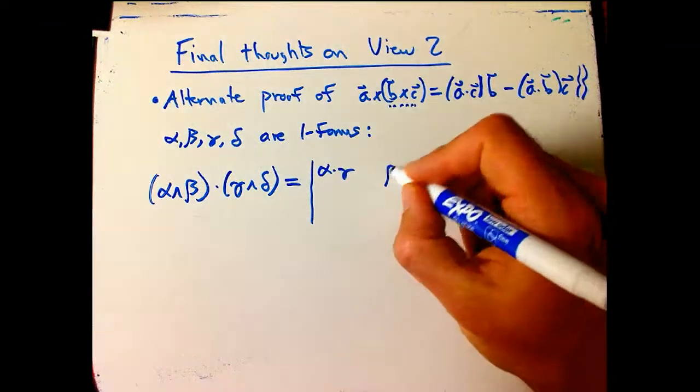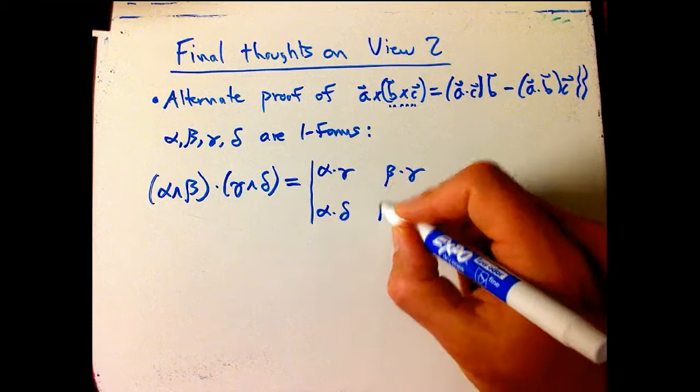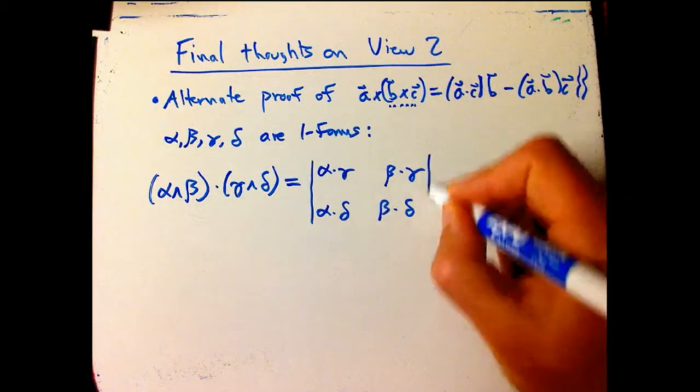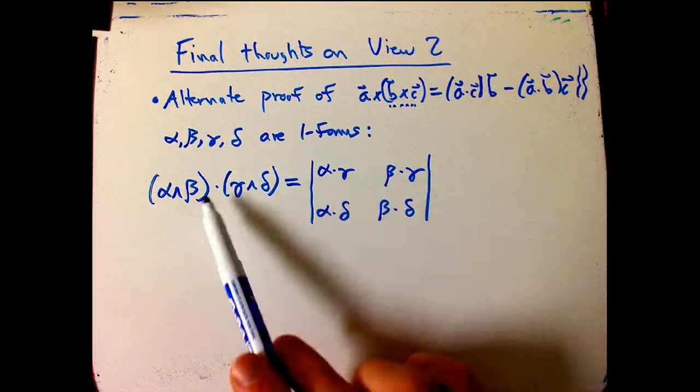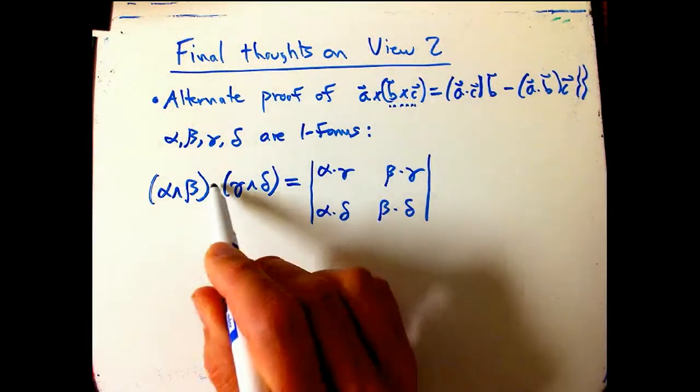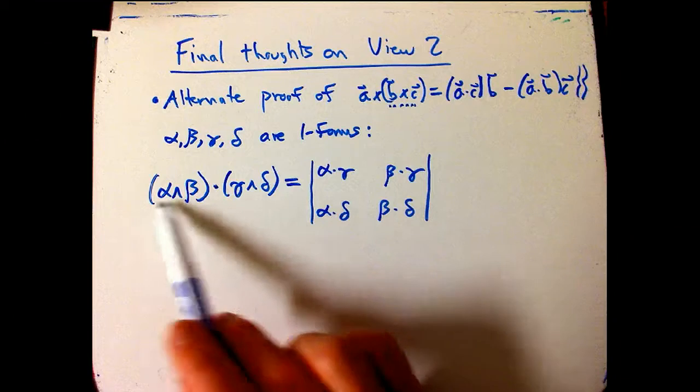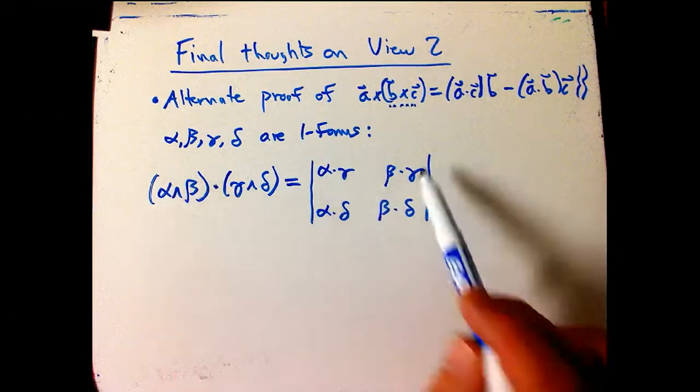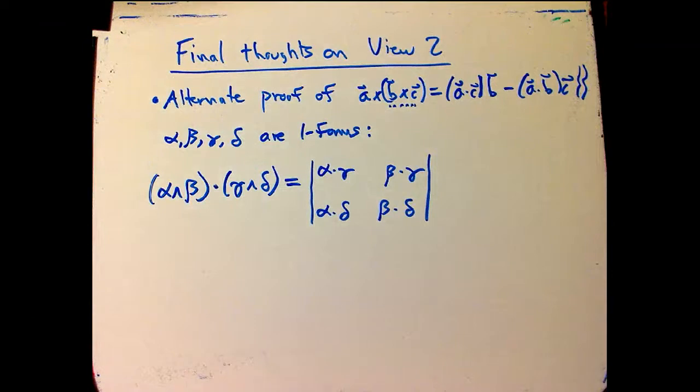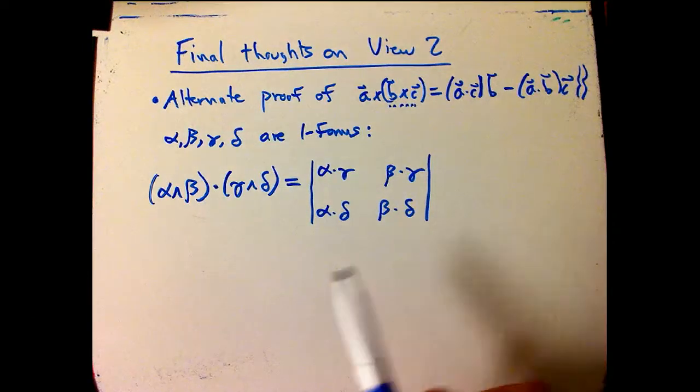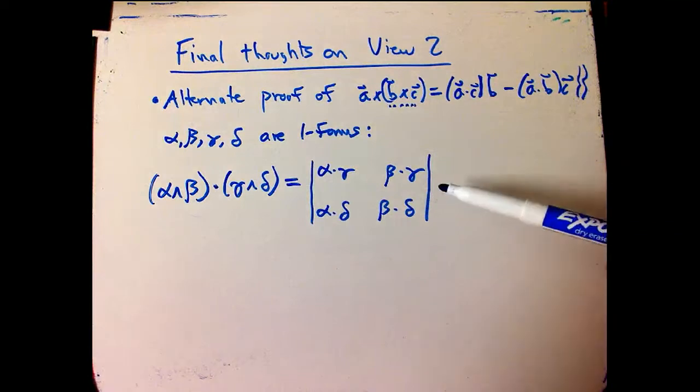I claim that this has a very nice formula. You just look at the pairwise dot products of these forms, and take a two by two determinant. Hopefully that's pretty reasonable. The dot product of two forms, if those two forms are built out of one forms, it should have to do with the dot products of the individual one forms. And anything to do with two forms, that really should have to do with two by two determinants, because two forms are kind of encoding two by two determinants. They're encoding areas. So this is pretty funky, but not at all surprising that this would be true.